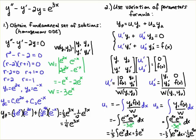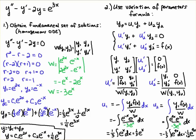Now that I have the particular solution (1/4)e^(3x) and the complementary function satisfying the homogeneous equation, I just add the two together. Remember, all solutions to ODEs have the form: complementary function plus particular solution. So the final solution is c1·e^(2x) + c2·e^(-x) + (1/4)e^(3x). That's how you solve a second-order non-homogeneous ODE using variation of parameters. There is another method called undetermined coefficients, but that's saved for a different video.